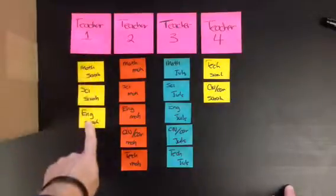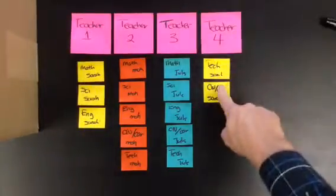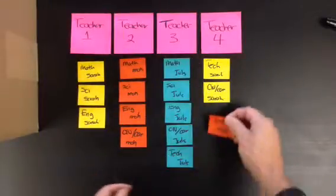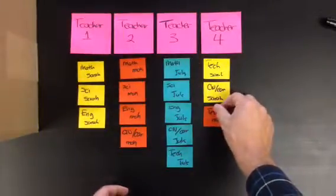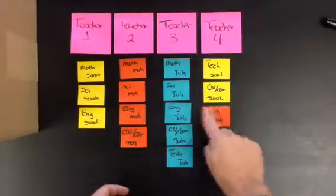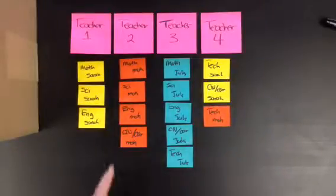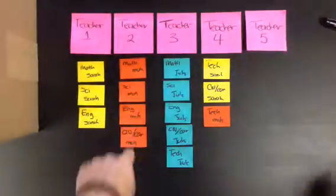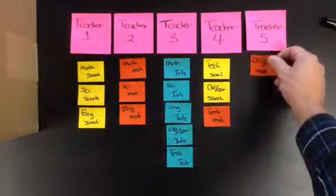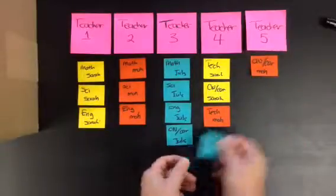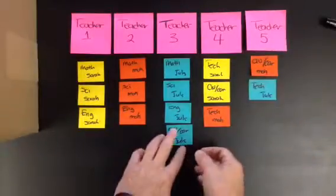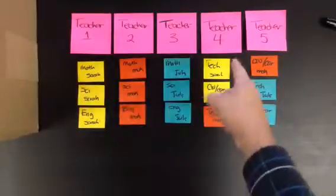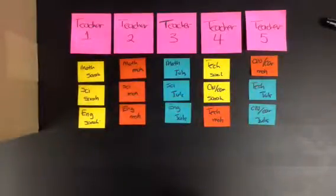So that leaves teacher one with three, teacher four now has two, so I can move teacher two has five. Right now we need to move one of teacher twos over here to give them three sections, which means we need to bring another teacher in now, because we still have these extra classes to teach. Bring this one over, so there we have five teachers, three sections each.